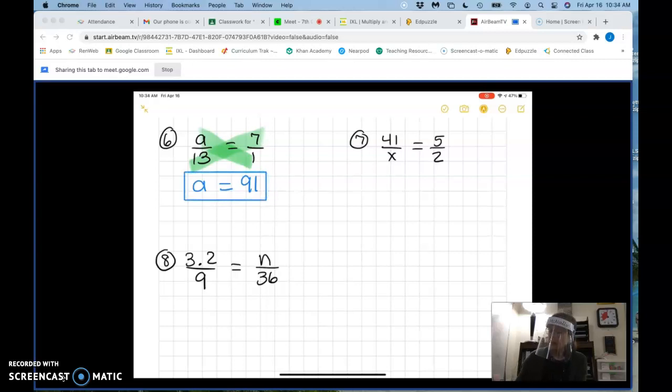How about number seven? Let's cross multiply. What is 41 times two? 82. Good. And what is five times x? Five x. Yes.